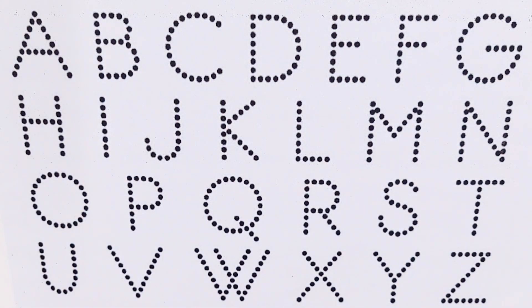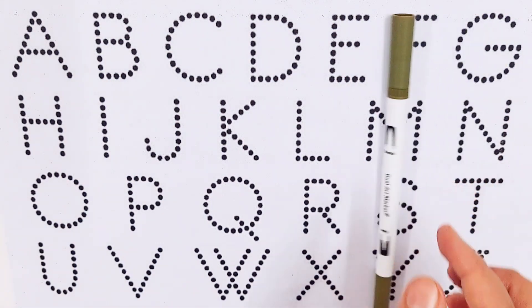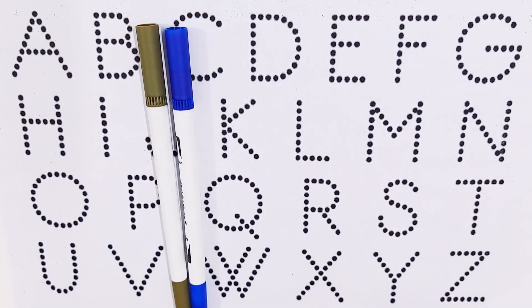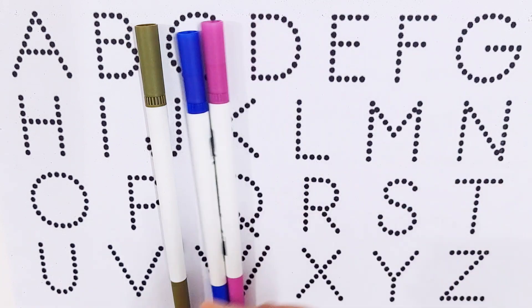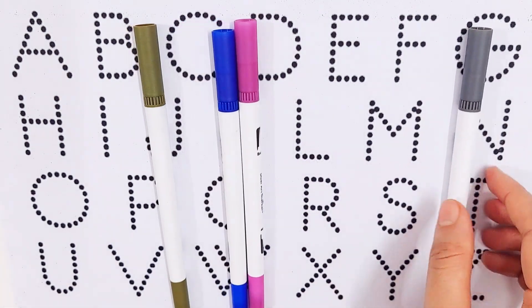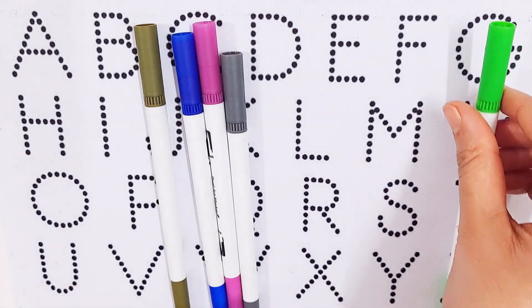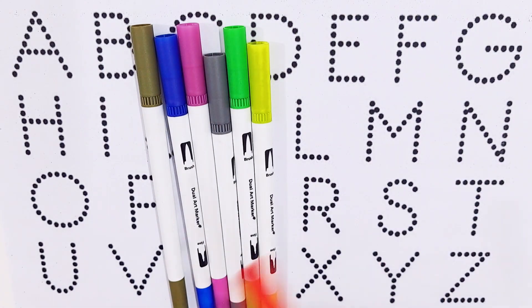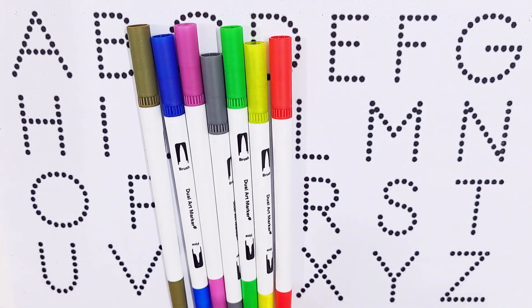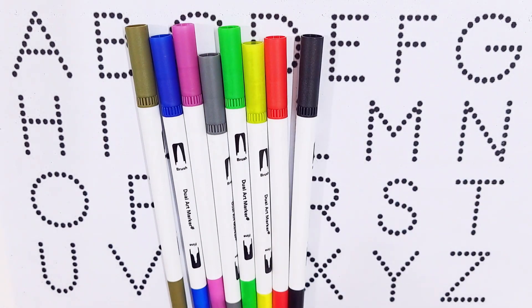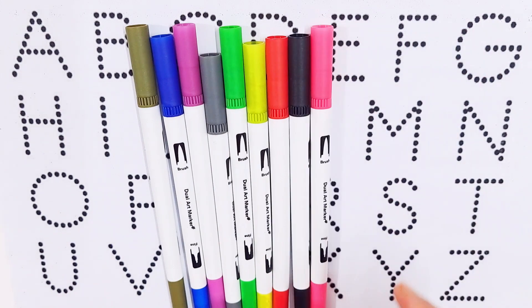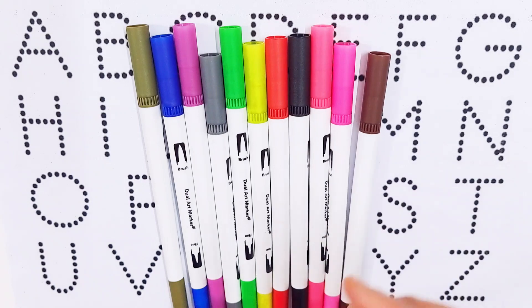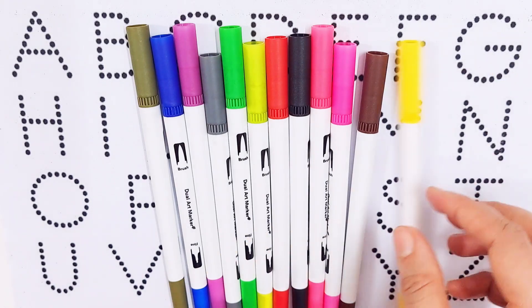Hello guys, let's learn some colors! Olive color, dark blue color, violet color, gray color, green color, lime color, red color, black color, pink color, purple color, brown color, yellow color.